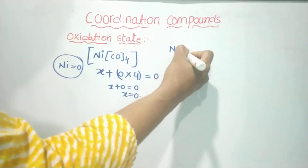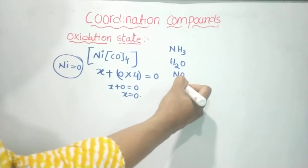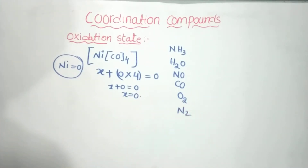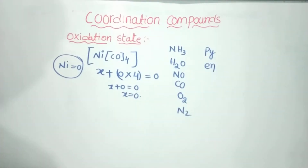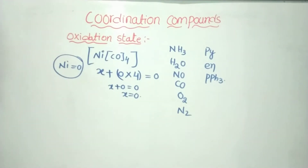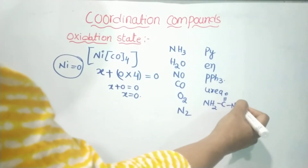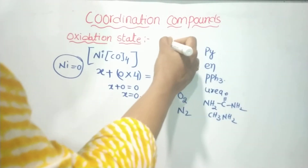Examples of neutral ligands include: amine (NH3) = zero, H2O (aqua) = zero, NO (nitrosyl), CO (carbonyl), O2 (oxygen), N2 (nitrogen), pyridine, ethylenediamine, PPh3 (triphenylphosphine), urea (NH2-CO-NH2), and methylamine (CH3NH2). All of these are neutral ligands.